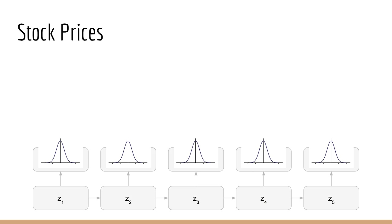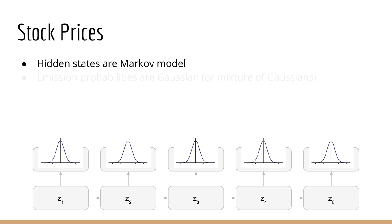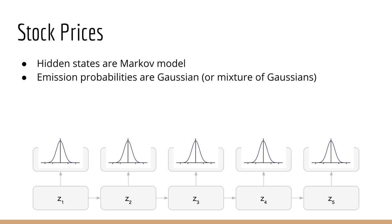Let's draw out what this would look like. Again, we have a sequence of hidden states, and again we make the Markov assumption that each hidden state depends only on the previous hidden state. The emission probability is now a Gaussian rather than a categorical distribution, since the observation is a continuous value. Of course you could choose other continuous distributions, but the Gaussian is the most common.